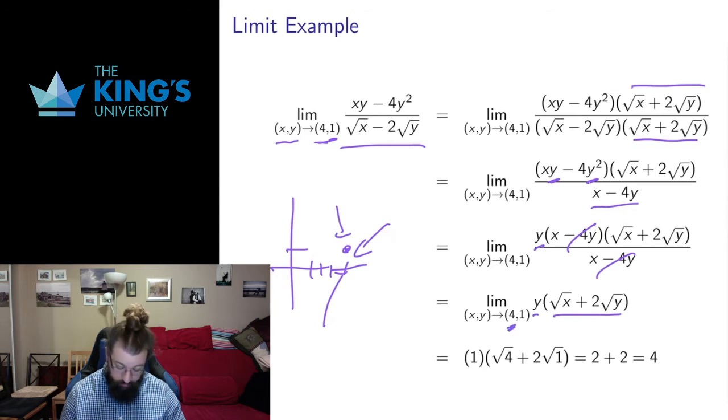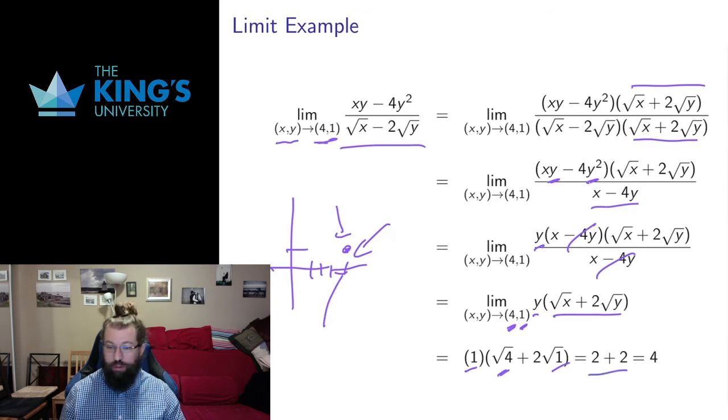I evaluate at x equals 4 and y equals 1. This x becomes 4, this y becomes 1, this y becomes 1, and evaluate that. I get a limit of 4. So the algebra is a little more complicated than the first example, but it still works. Anytime there are algebraic techniques like this, we are free to use them. They will still give us reliable results.